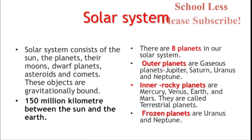The solar system consists of the Sun and objects bound by its gravitational pull in orbit. The solar system consists of the Sun, planets, moons, dwarf planets, asteroids and comets. These objects are gravitationally bound. The Earth is 150 million kilometers from the Sun.